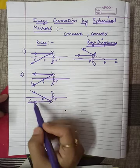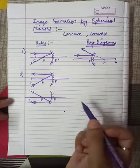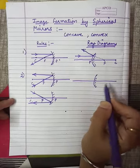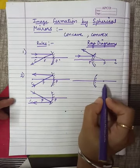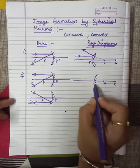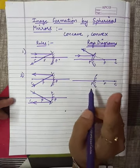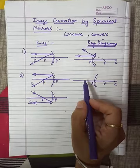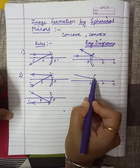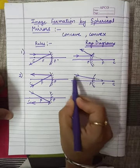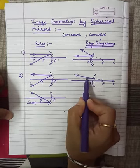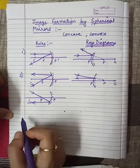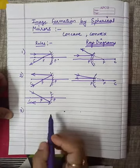For a convex mirror, the second rule applies similarly. The incident ray will appear to pass through focus — it will not actually pass through. So if any incident ray appears to pass through focus, or is coming in the direction of focus, then after reflection it will become parallel to the principal axis.